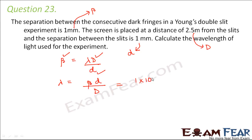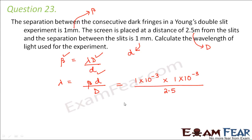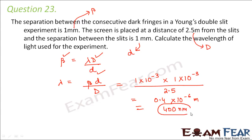Beta is 1 mm = 1×10⁻³ m, d is 1×10⁻³ m, and D is 2.5 m. So lambda equals (1×10⁻³ × 1×10⁻³) / 2.5, which gives 0.4×10⁻⁶ meters, or 400 nanometers. So 400 nm is the wavelength of light used in this experiment.